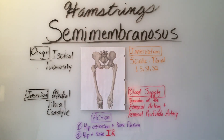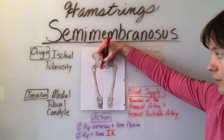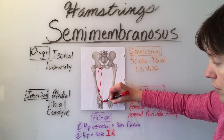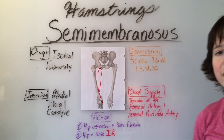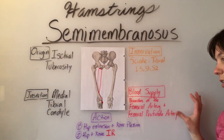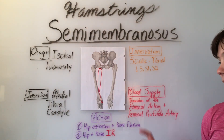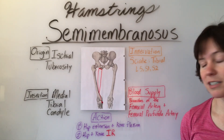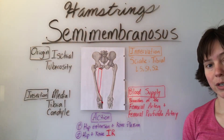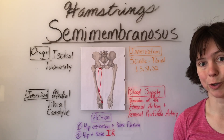The third member of the hamstrings family is the semimembranosus. It also originates on the ischial tuberosity and comes down to insert on the medial tibial condyle. Its innervation is the tibial division of the sciatic nerve, L5, S1, S2. Blood supply comes from branches of the femoral artery and femoral profunda artery. It has the same actions as the semitendinosus — primarily hip extension and knee flexion — and secondarily, the semimembranosus will perform hip and knee internal rotation.